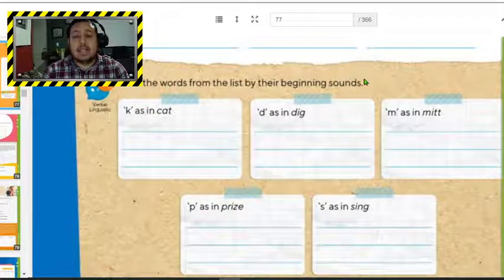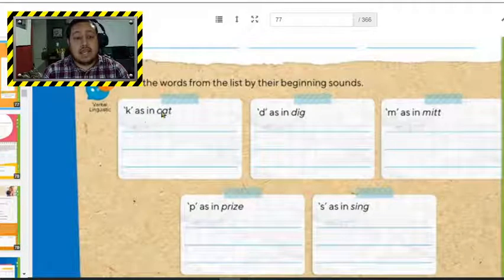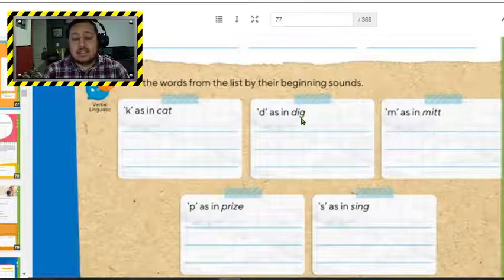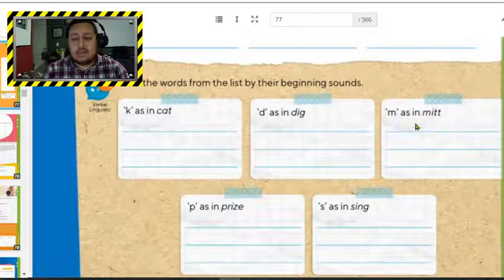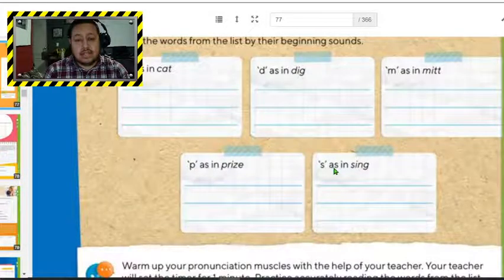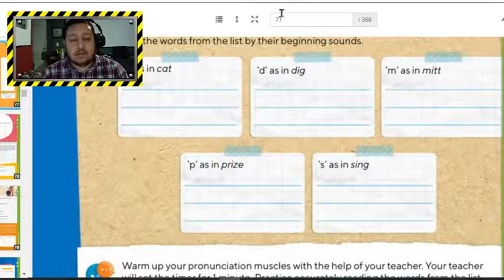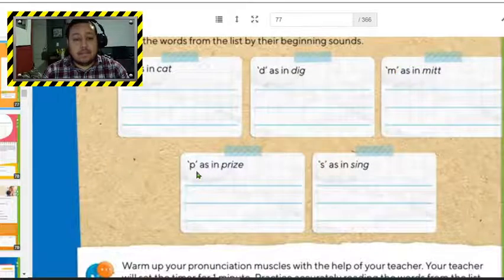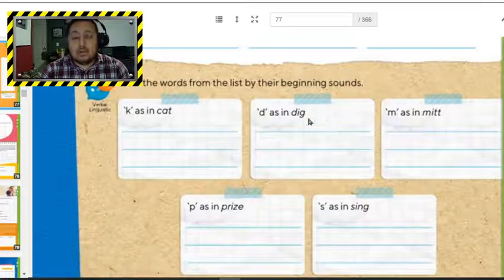Let's go to the next activity. It says here, sort the words from the list by their beginning sounds. So here we're going to classify our words. It says here, K as in cats. So they need to start with the sound K, as in cat. Todas las que empiecen con el sonido de la K, como cat. Here, as D, as in dig. So what words begin with D? Las palabras que empiecen con el sonido de la D. And here, the letter M, as in mitt. Which words begin with the letter M? And here, P as in prize, and S as in sing. So here you need to classify the words by their beginning. Con sus sonidos de inicio. The words that begin with the sound K here at D, M, P, and S. This is going to be the activity of working with sounds that you need to use the words using their sounds.